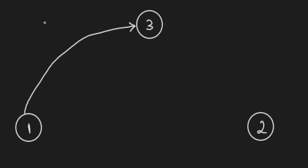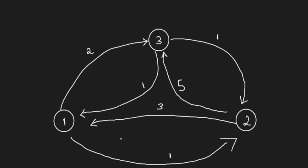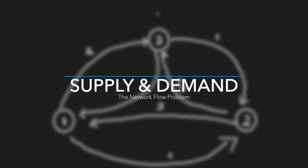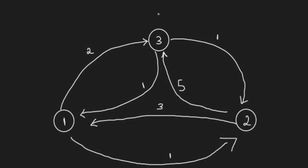Let's say we have three nodes connected through paths. To push units from one to three costs two per unit, and from three to one the cost is one. Filling in the full network: from one to two costs one, two to one costs three, and so on. On top of that we need supply and demand — otherwise there is nothing to push. Node three will be the supplier, with an arrow coming from outside the network.